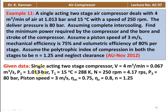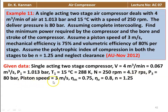So the given data: single-acting two-stage compressor. Volume of air handled V = 4 m³/min = 0.067 m³/s. Inlet pressure P1 = 1.013 bar. Temperature T1 = 15°C = 288 K. Speed = 250 RPM = 4.17 RPS. Delivery pressure P3 = 80 bar. Piston speed = 3 m/s. Mechanical efficiency = 0.75. Volumetric efficiency = 0.8. Polytropic index n = 1.25.